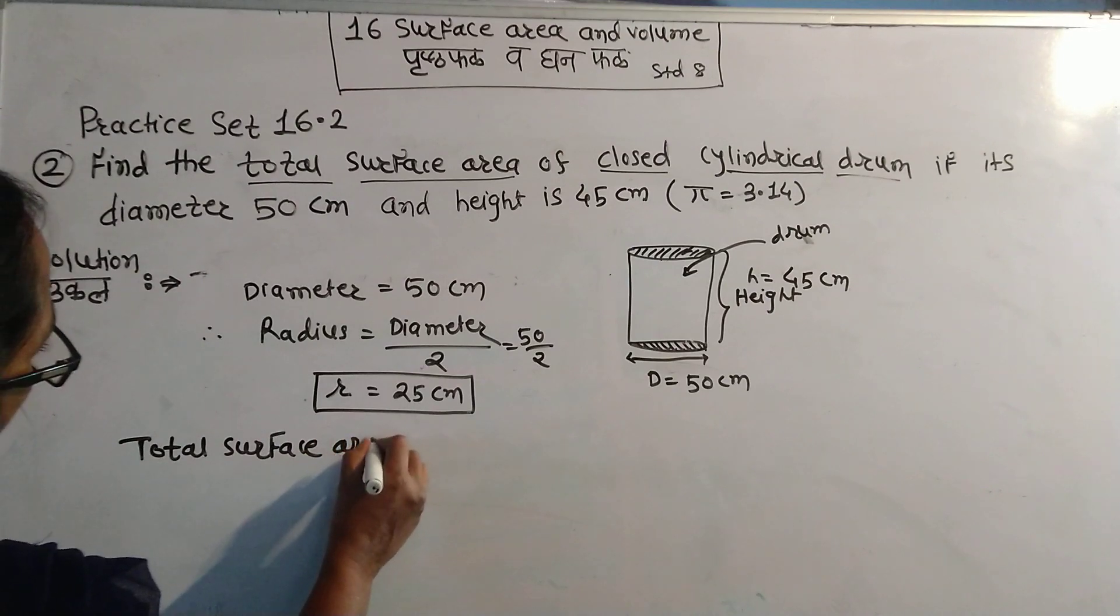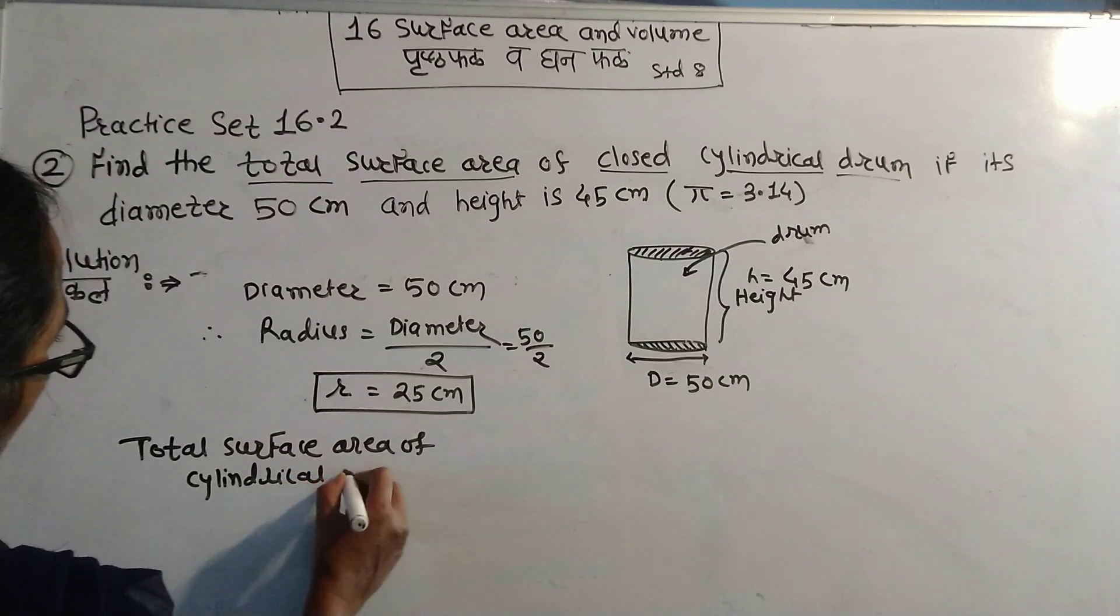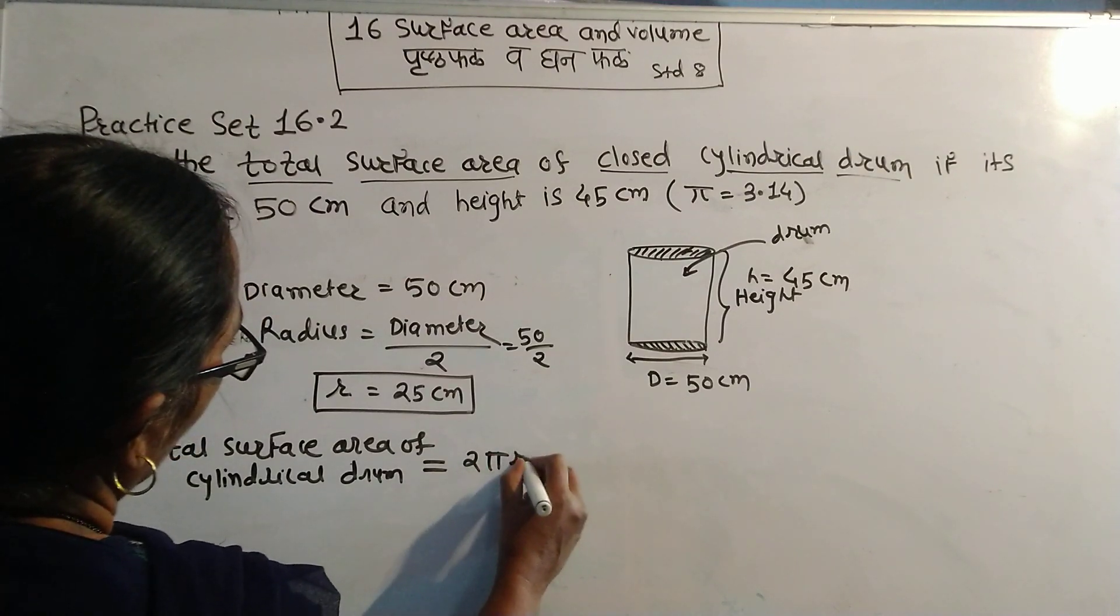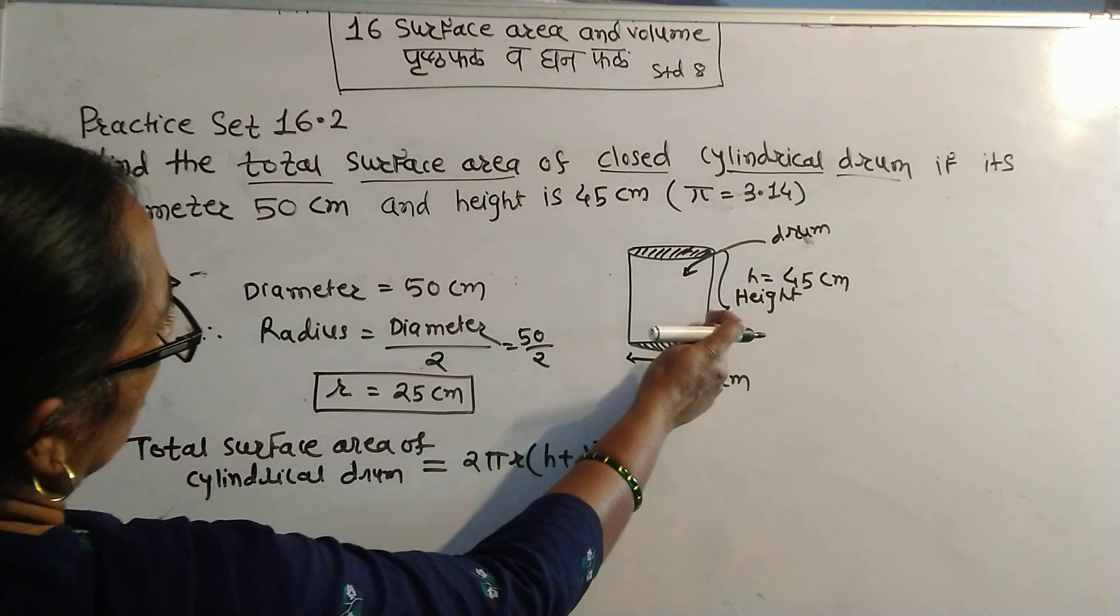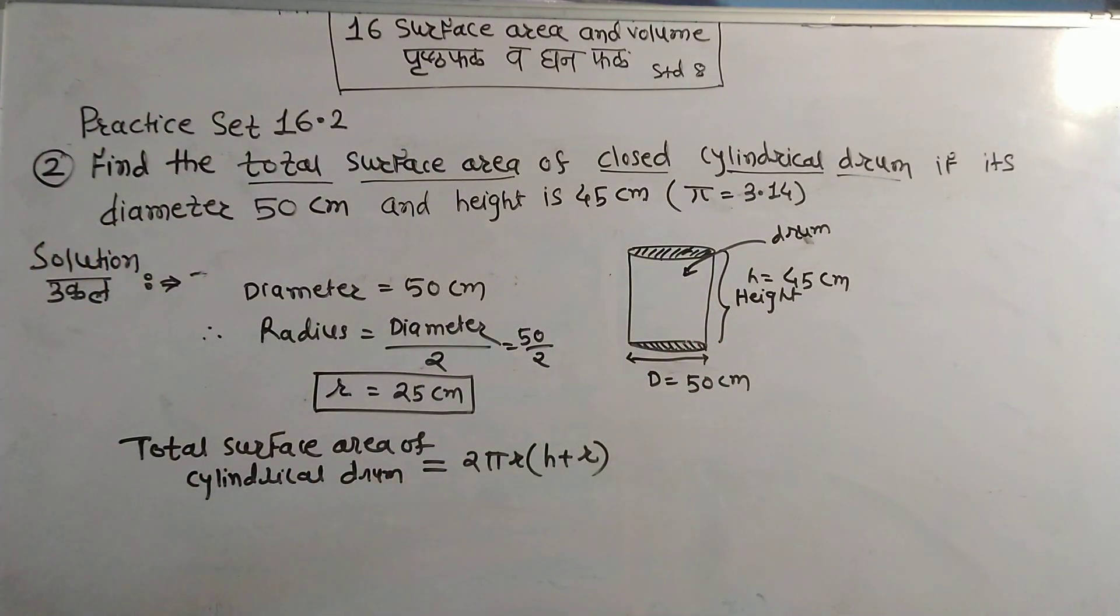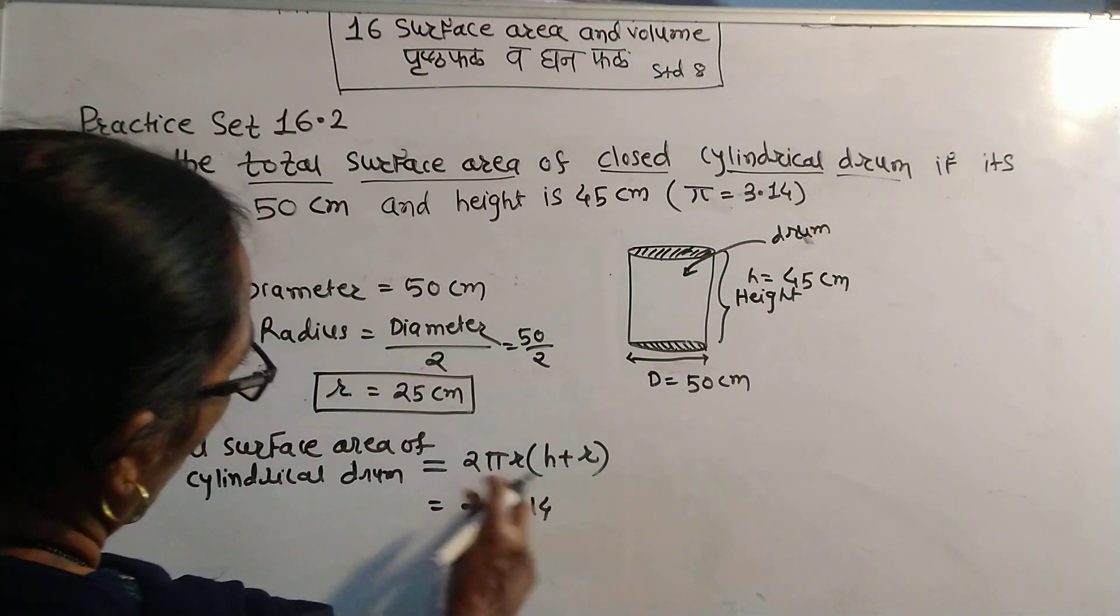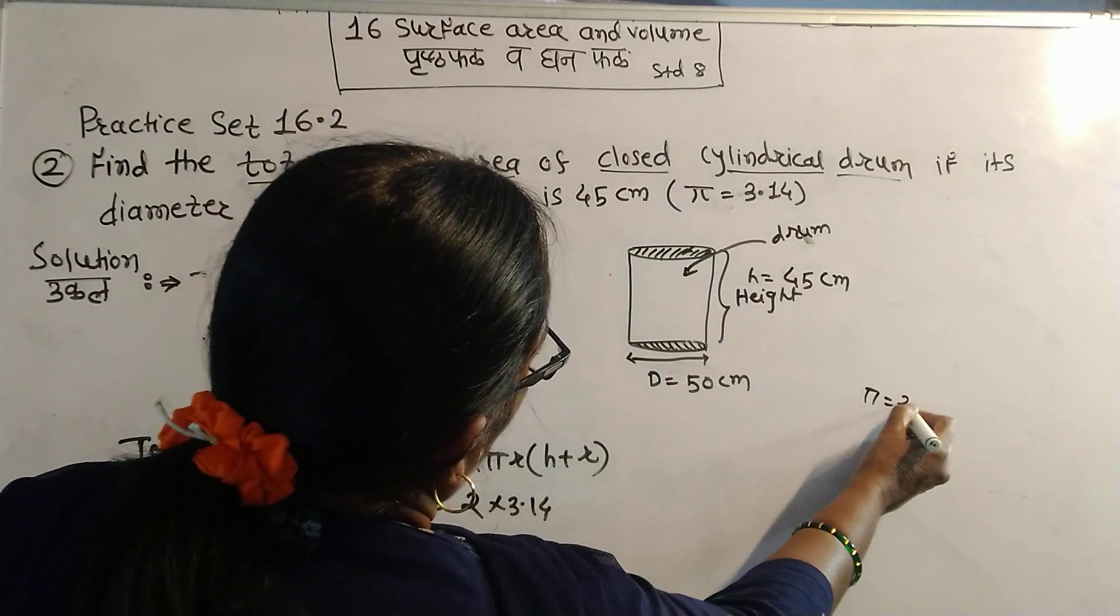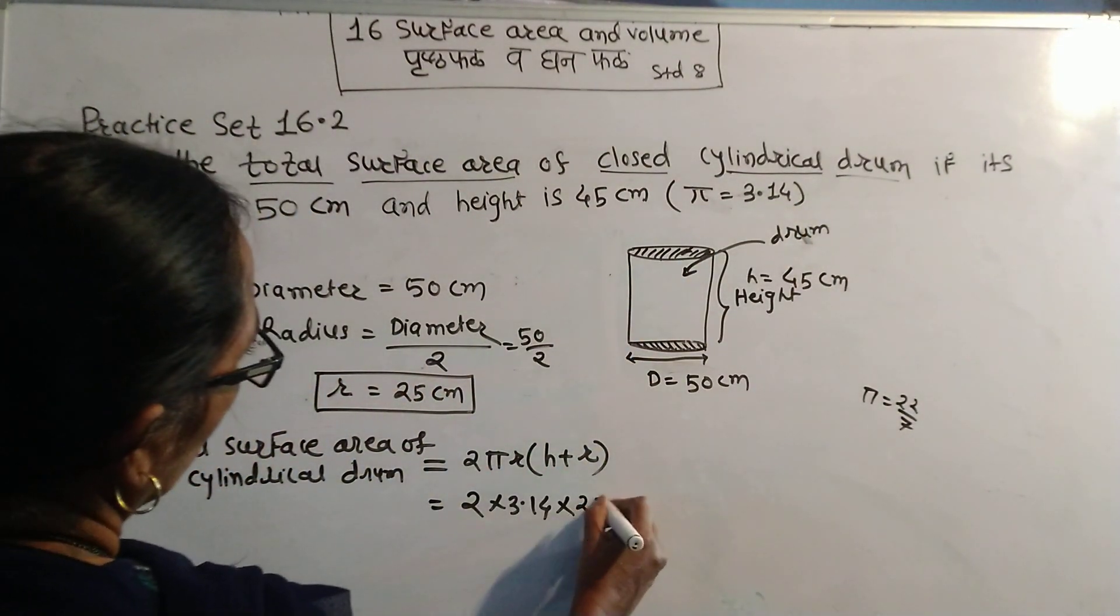Now total surface area of cylindrical drum equal to 2 pi r in bracket h plus r. Total surface area includes upper and lower surface area. The value of pi is equal to 3.14, and r is equal to 25.